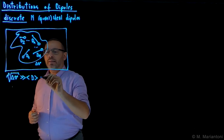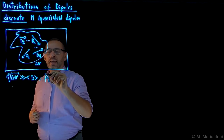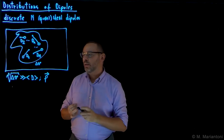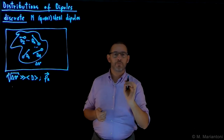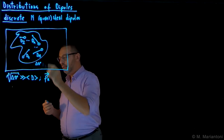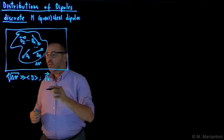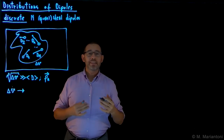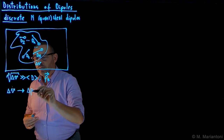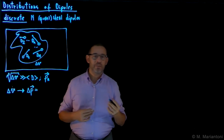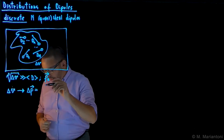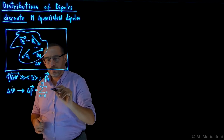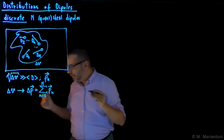Each of these dipoles is characterized by a dipole moment P_n, where small n indexes the generic nth dipole within this region of space. Within this physics infinitesimal region delta V, the effective dipole moment delta P is nothing but the sum of all dipole moments: the sum for small n from one to capital N of P_n.